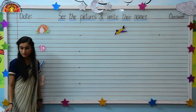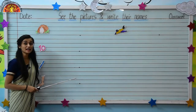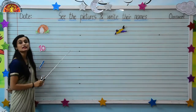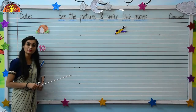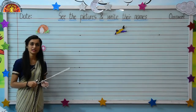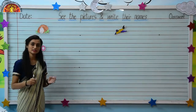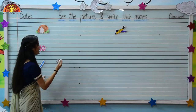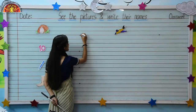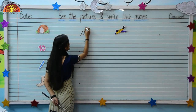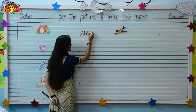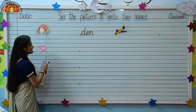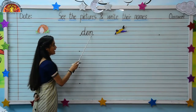Let's see the first picture kids. Can you please tell me which picture is this? Tell me fast. This is DEN. And what is the spelling of DEN? The spelling of DEN is D-E-N. We will write the spelling of DEN over here like this: D-E-N.